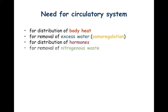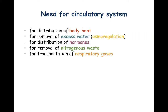It is required for removal of nitrogenous waste. Nitrogenous waste like urea, uric acid, creatinine are removed out in the urine with kidneys, but blood needs to take it to the kidneys. It is also required for transportation of respiratory gases — oxygen needs to be given to the tissues, carbon dioxide needs to be removed out. This can be done by blood, hence the requirement of circulatory system.